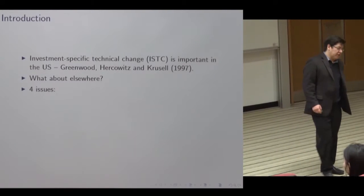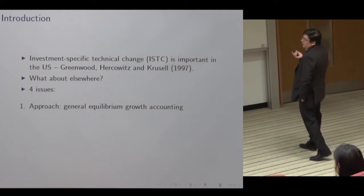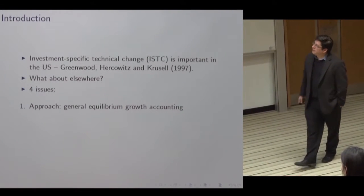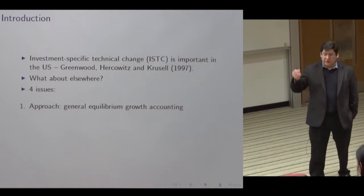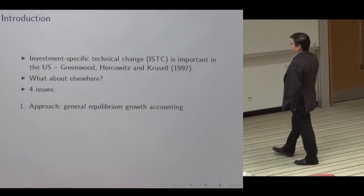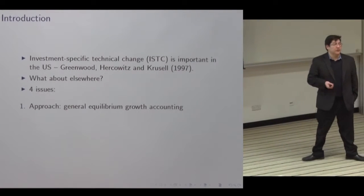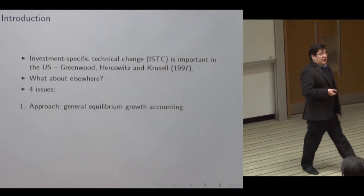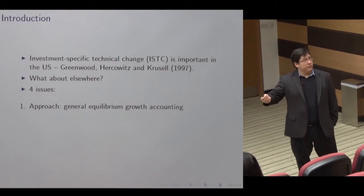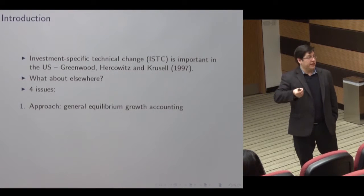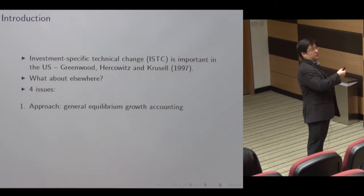There are certain issues we need to confront if we're going to try and do this for a wider set of countries. One is the approach to determining how big the contribution of a given factor of growth is — we're going to go with general equilibrium growth accounting. This means that capital deepening induced by a particular factor of growth, such as productivity change or ISTC, is part of the contribution of that factor.